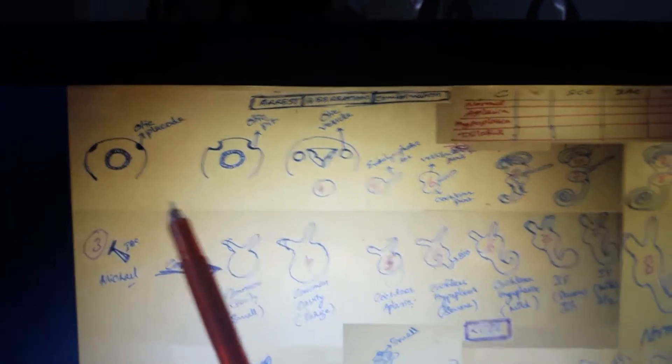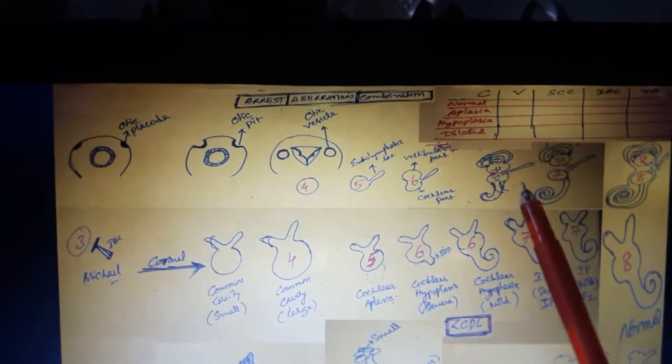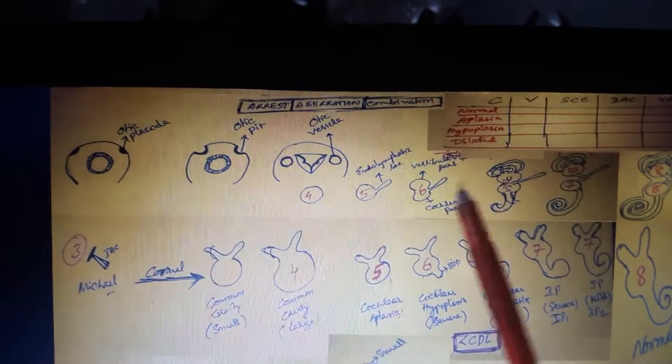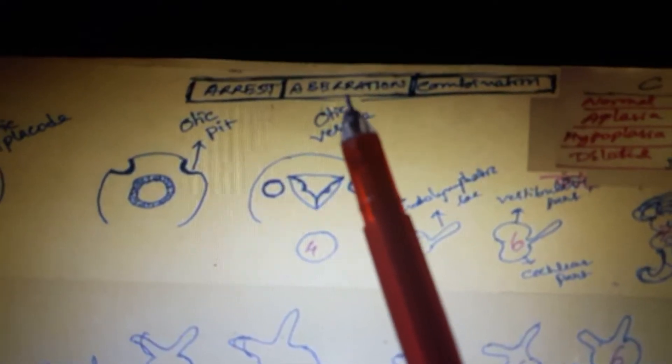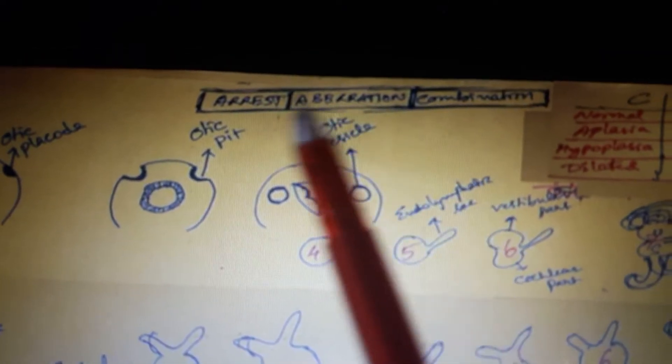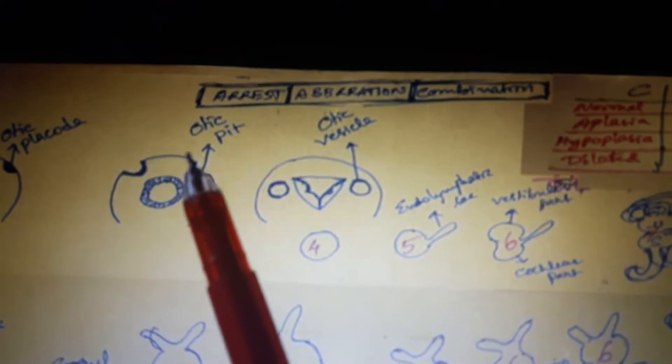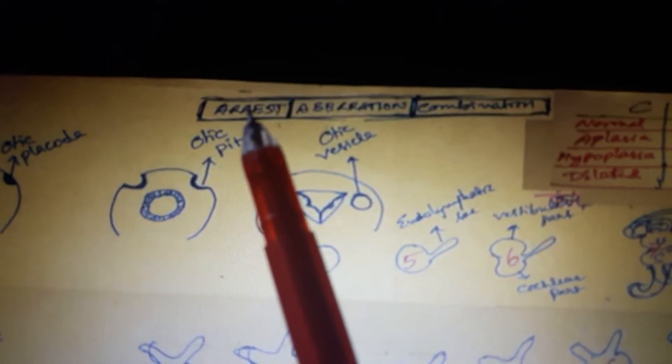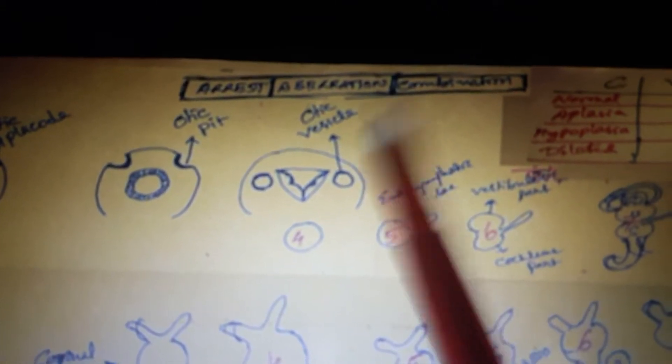When you want to study abnormal cochleas, you have to correlate with embryological development — then only you will understand, and the whole topic becomes very easy. Abnormal cochleas develop due to arrest or aberration or a combination of both in embryological development.